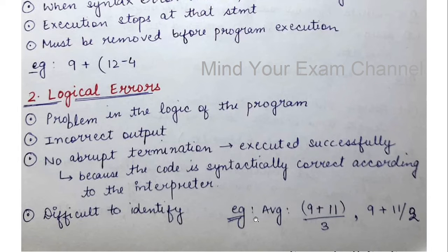For example, if you need to find the average of two numbers and write 9 plus 11 divided by 3, there is nothing wrong with the syntax. But logically, average is not computed like this. When you find the average of two numbers, you need to divide by 2. In the second example, 11 would first be divided by 2 and the result added to 9, which would not give the correct average.